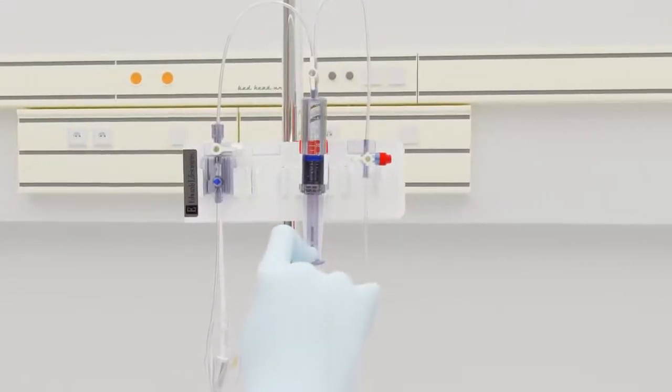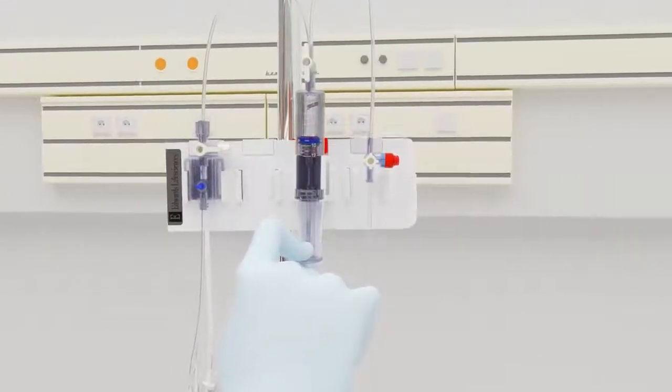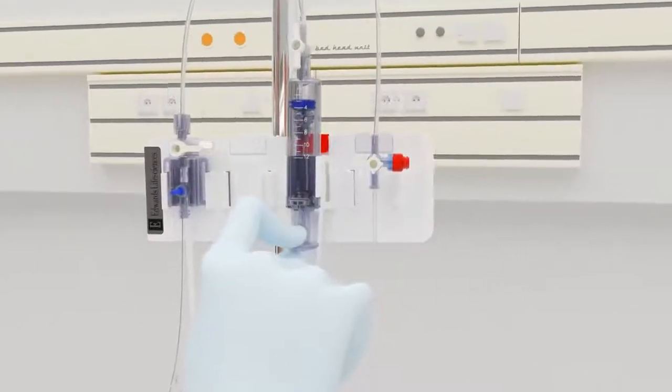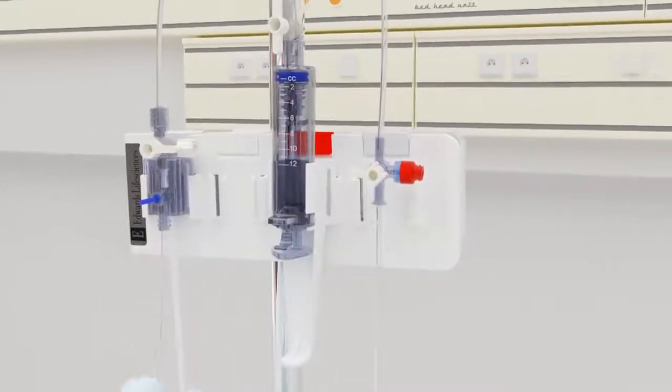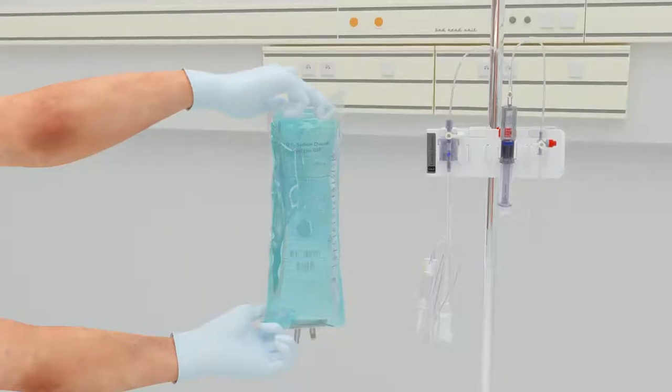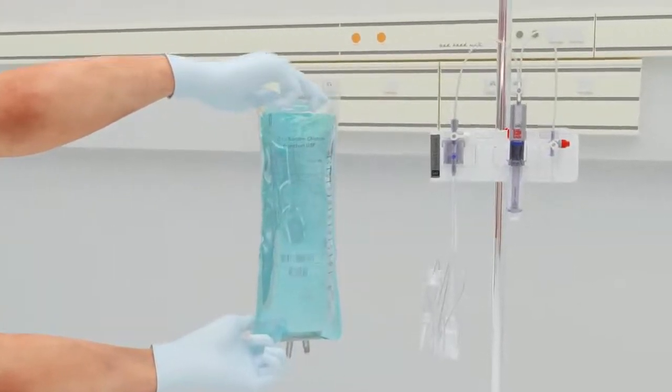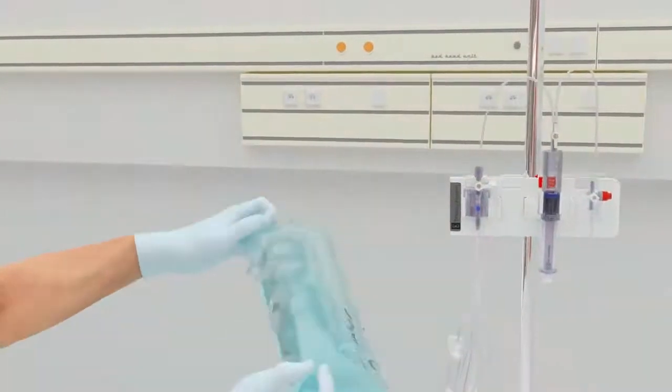Now that you've set up the VAMP Plus system, let's learn how to prime and use the system. The first step is to push the reservoir plunger to the closed and locked position, then connect the VAMP Plus system to an IV fluid source.